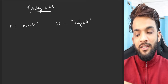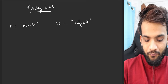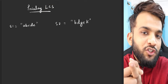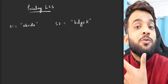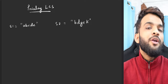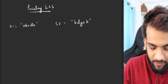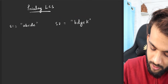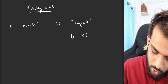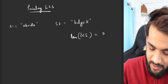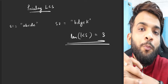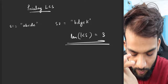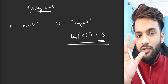Hey everyone, welcome back to Take You Forward. In the previous video we solved the LCS problem. We learned about the memoization technique, the tabulation technique, and the space optimization technique. We learned how to print the length of the longest common subsequence — for example, given a couple of strings, the length came out as 3. Now what if I change the question?